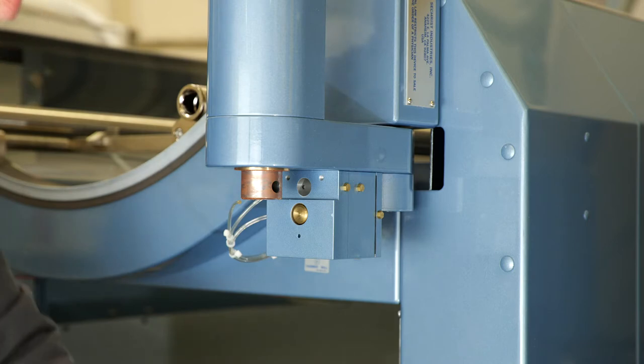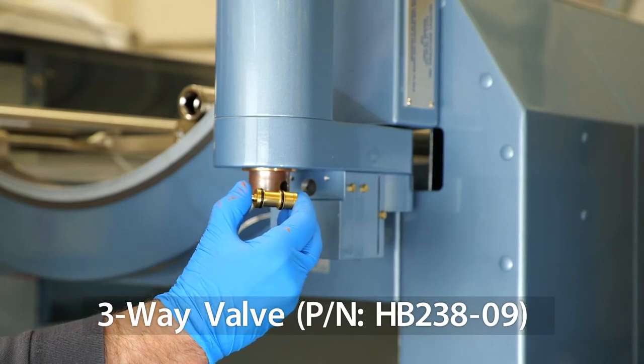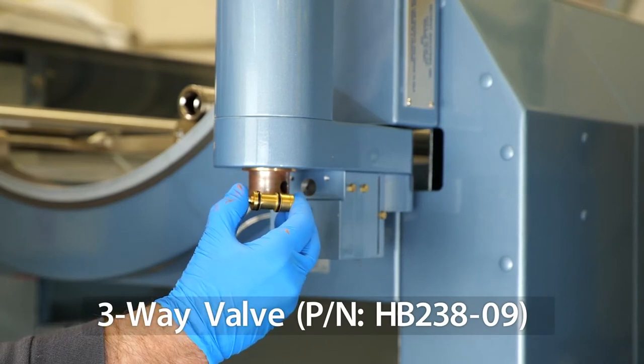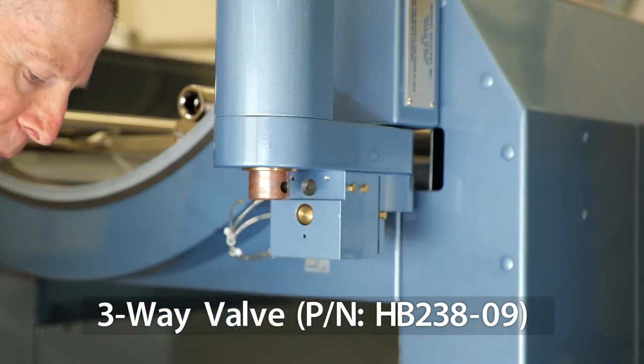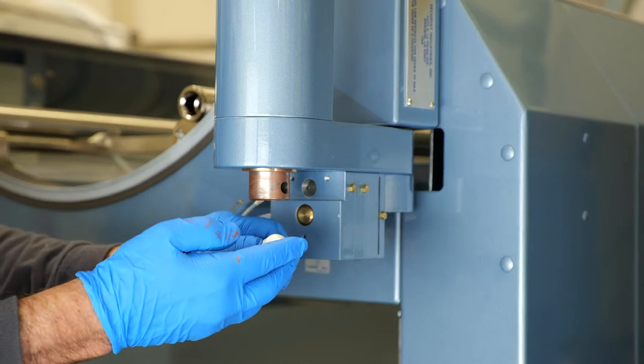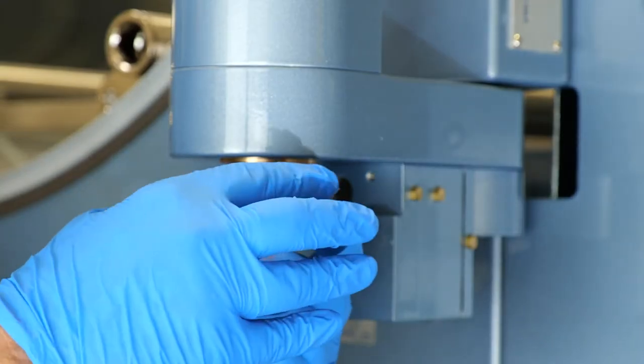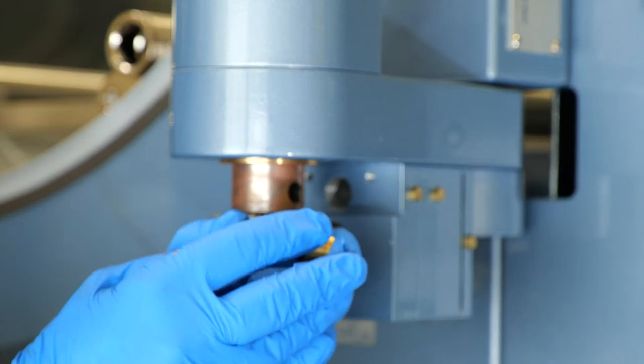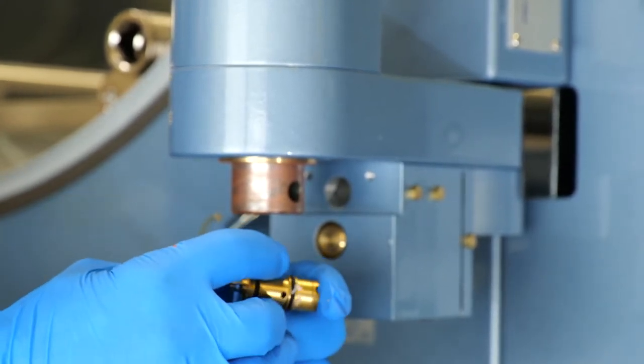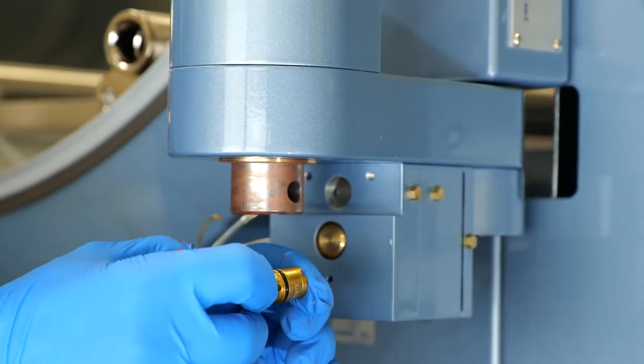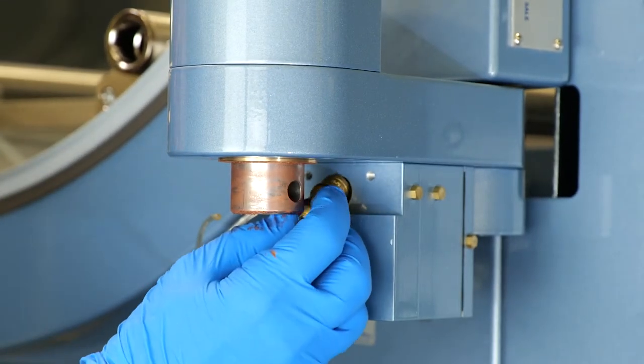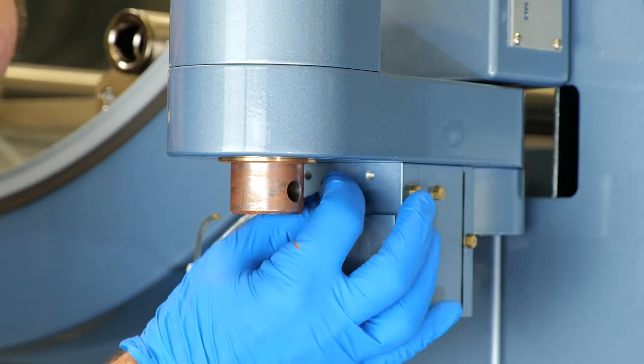Now that we have the old three-way removed, we want to take our new three-way out of the package. Here's the new three-way valve. What we need to do before we insert it is to put just a little bit of Krytox grease on each one of these O-rings. So we'll put a little bit of grease on our finger. Then, holding our three-way valve, we'll just put a very light coating on both O-rings. Once that's done, we'll take our three-way, reinsert it back into the safety block.